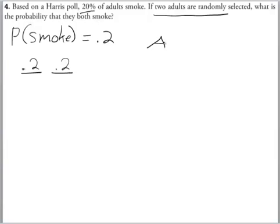And since they both have to smoke, this is an and question. That one and two both smoke. So when we have and questions, we multiply. And the probability is .04.